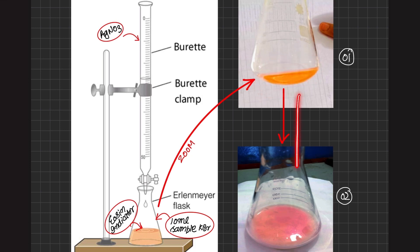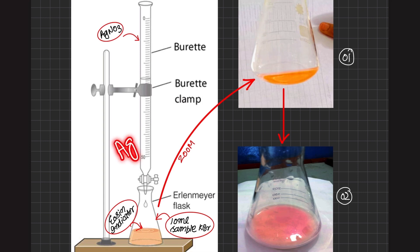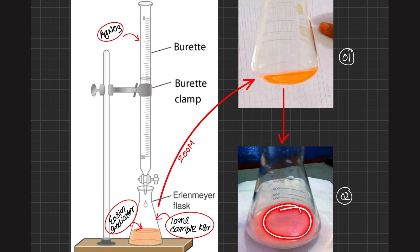The color shifts from clear brown to a cloudy nature because as we add silver nitrate, it reacts with KBr to form silver bromide precipitates. The cloudiness in the titration flask is due to the formation of silver bromide precipitates.